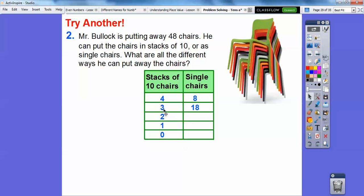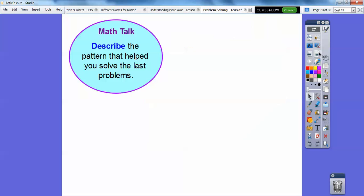So we're going to take one stack of 10 away. So that means there's only 2 stacks. So that means we're going to, for the single chairs, we're going to have 18 plus 10 or 28. So decrease this tens column by 1. It's going to increase this singles column by 10. So 38. And finally, 48 right there.